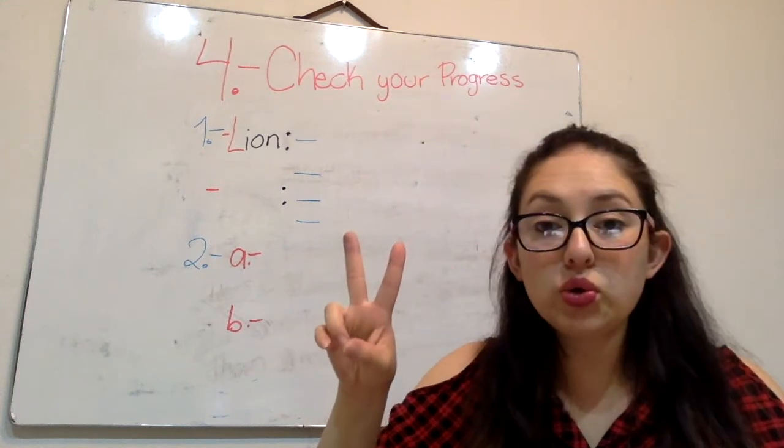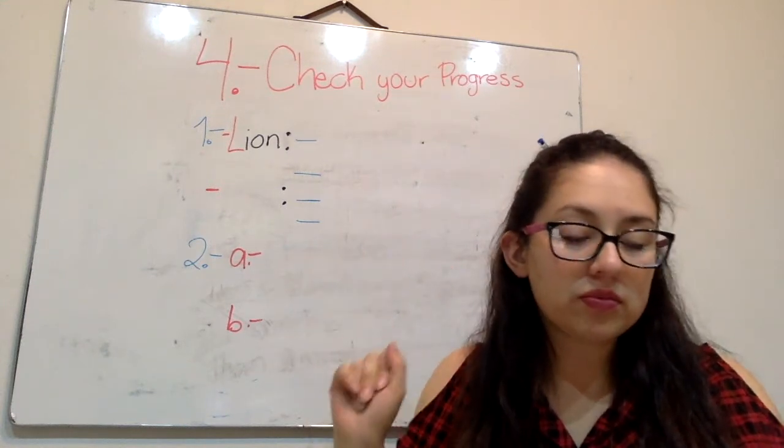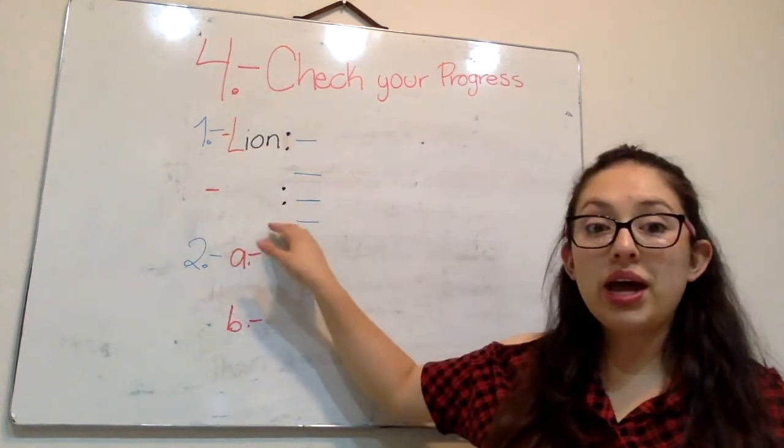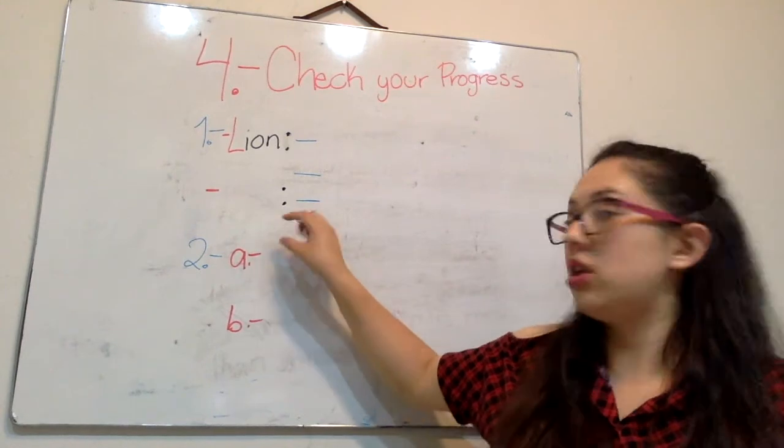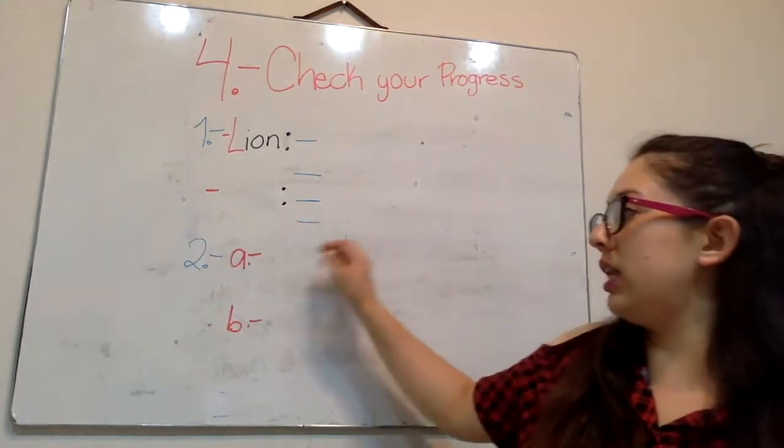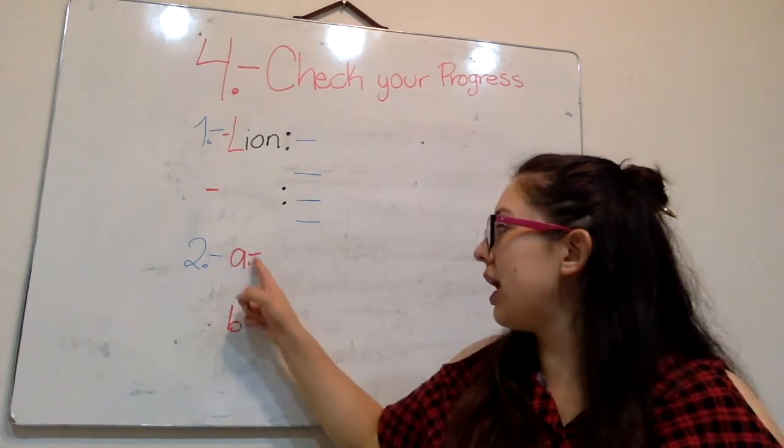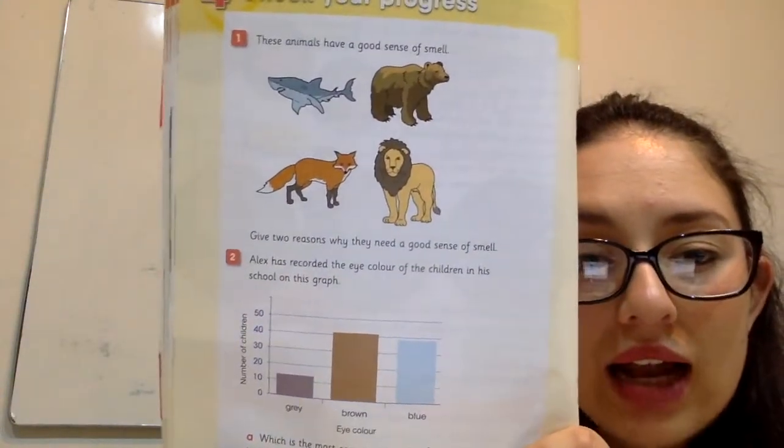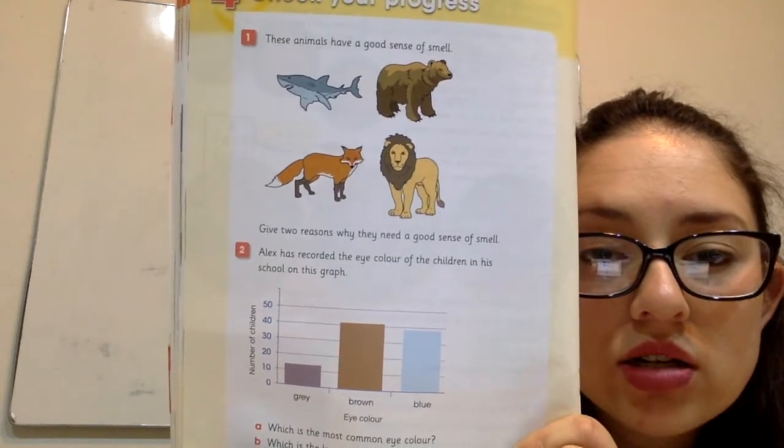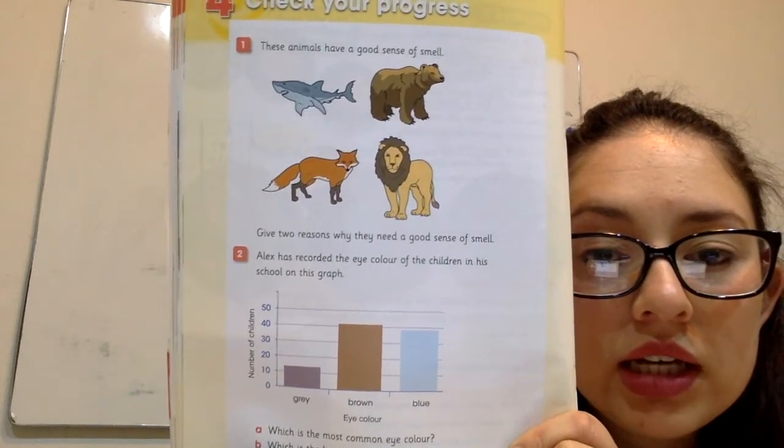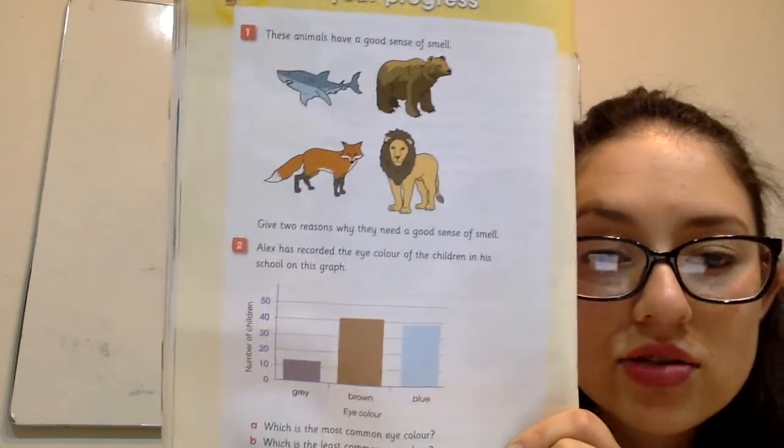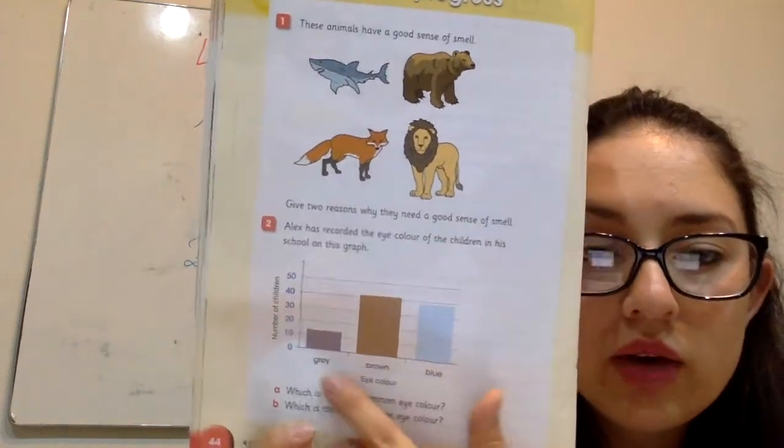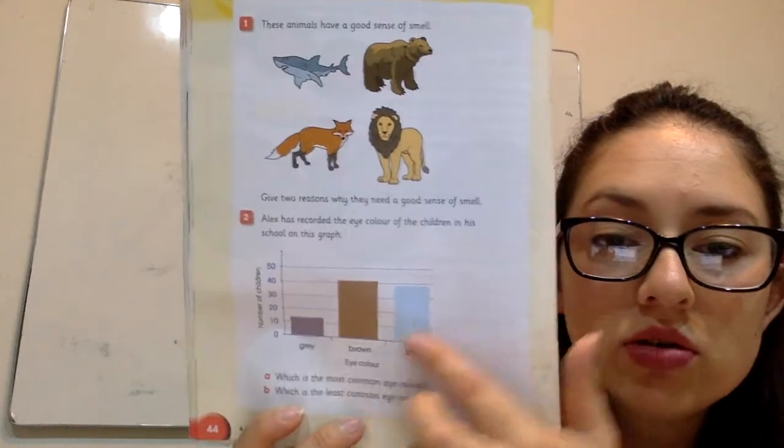And the number two is, entonces ya terminé yo acá, dejo mi línea entre el uno y el dos. Number two, puse a and b porque dice Alex has recorded the eye color of the children in his school on this graph. Entonces tenemos blue, brown and gray, tenemos del 0 hasta el 50.